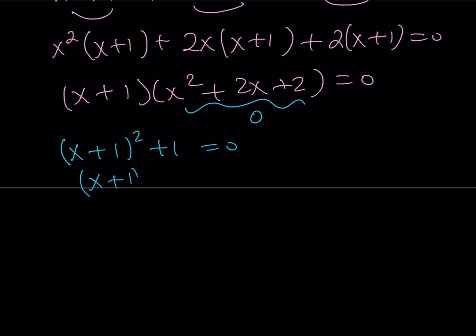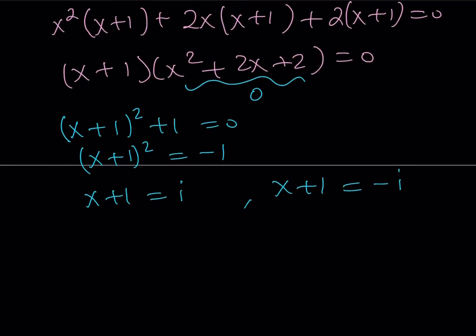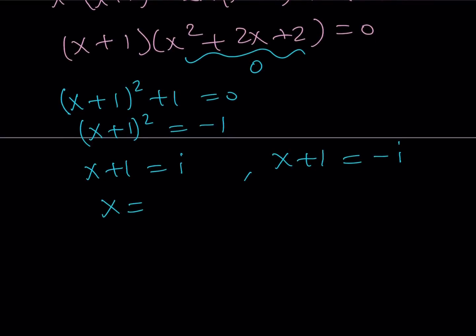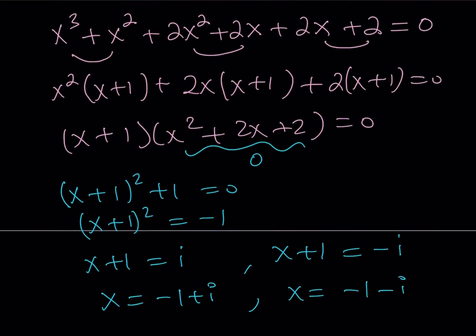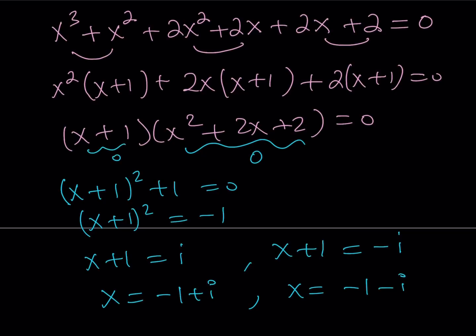But what about the other solutions? They are complex. We'll also find the complex solutions. So let's set it equal to 0, and notice that this can be written as (x + 1)² + 1 = 0. From here, (x + 1)² = -1.